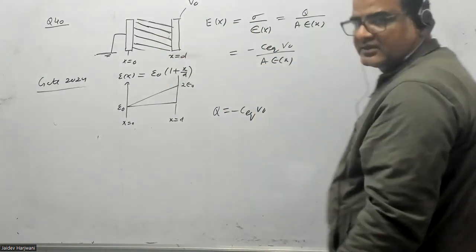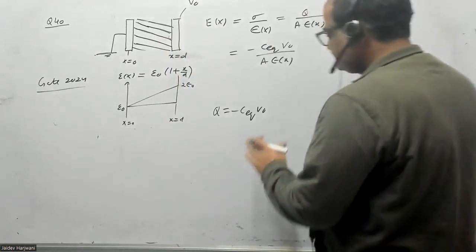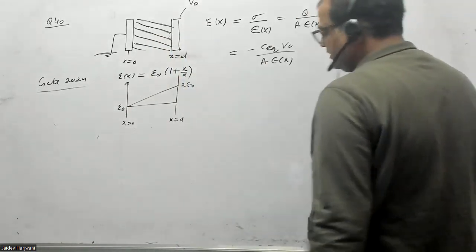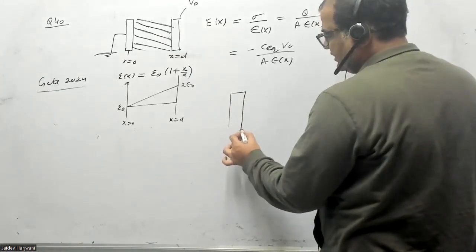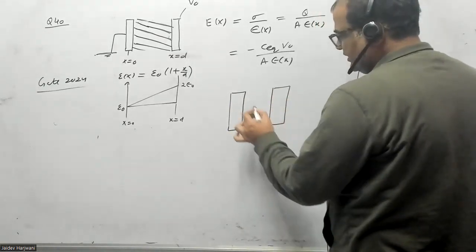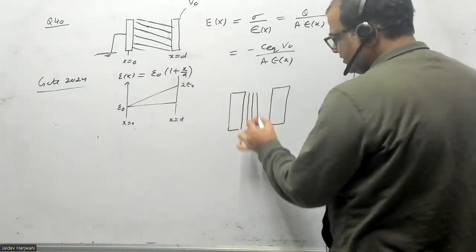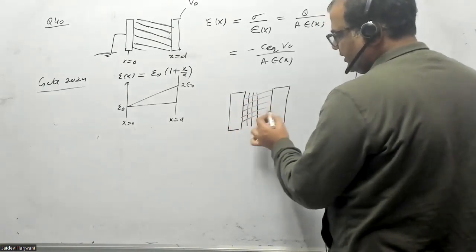Let us now calculate the C equivalent of this capacitor. In order to calculate the C equivalent in this capacitor, I can divide this parallel plate capacitor into small capacitors of delta X length.